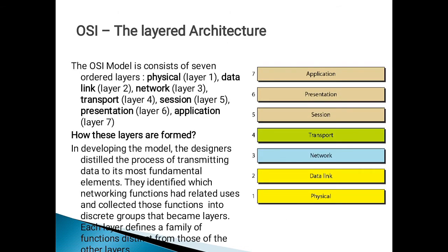OSI as a layered architecture: the OSI model consists of seven ordered layers. These are the physical layer, data link layer, network layer, transport layer, session layer, presentation layer, and application layer.